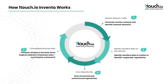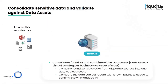The discovered data is now validated against known lists of individuals the organization has a relationship with. We call these lists data assets, but you can think of them as virtual groups of customers, employees, or any other subset of humans with a defined business relationship to the company. Inventa has collected many pieces of sensitive personal information about a John Smith from across the enterprise — from files, logs, transactions, databases, etc. — but Inventa can't tell you if this John Smith data is a customer, an employee, or neither. Additionally, there may be multiple John Smiths in the organization, each with their own sets of data that need to be associated appropriately.